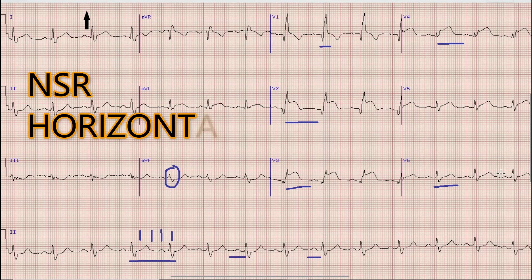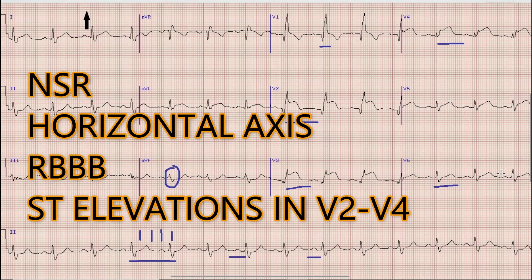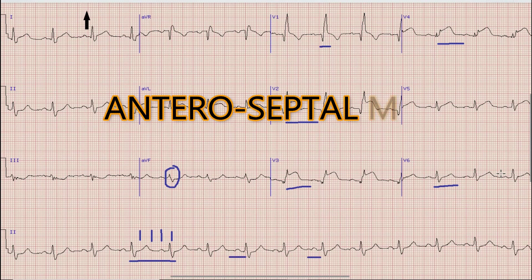So to sum up the findings: there is normal sinus rhythm, the axis in this case is horizontal, there is right bundle branch block with ST elevations in leads V2 to V4, and the diagnosis in this case is anteroseptal myocardial infarction.